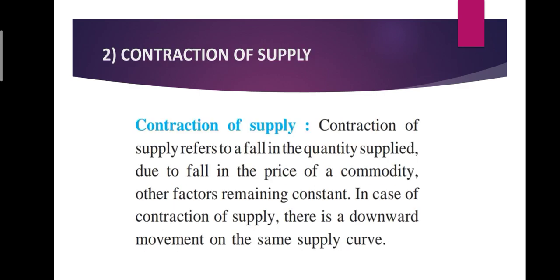The second type is contraction of supply — here supply decreases. The condition remains the same: only price varies, other things remain constant. When price falls, supply also falls. Contraction of supply refers to a fall in the quantity supplied due to a fall in the price of a commodity, other factors remaining constant. In case of contraction of supply, there is a downward movement on the same supply curve.